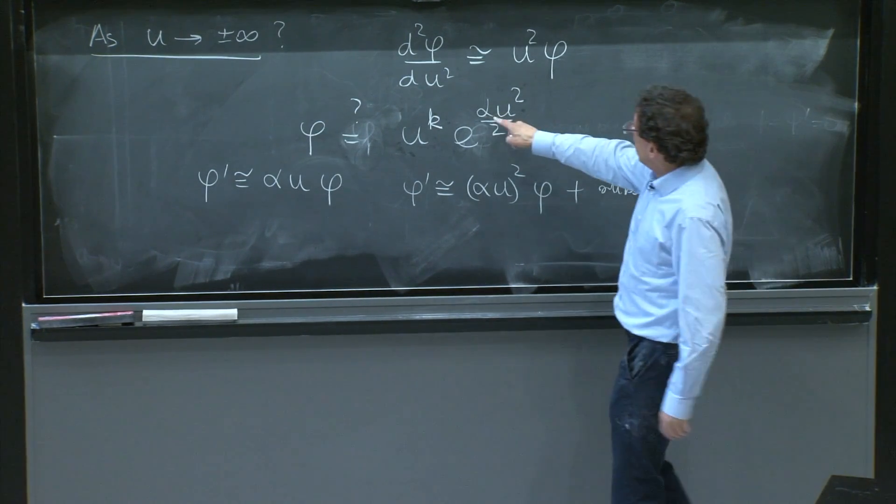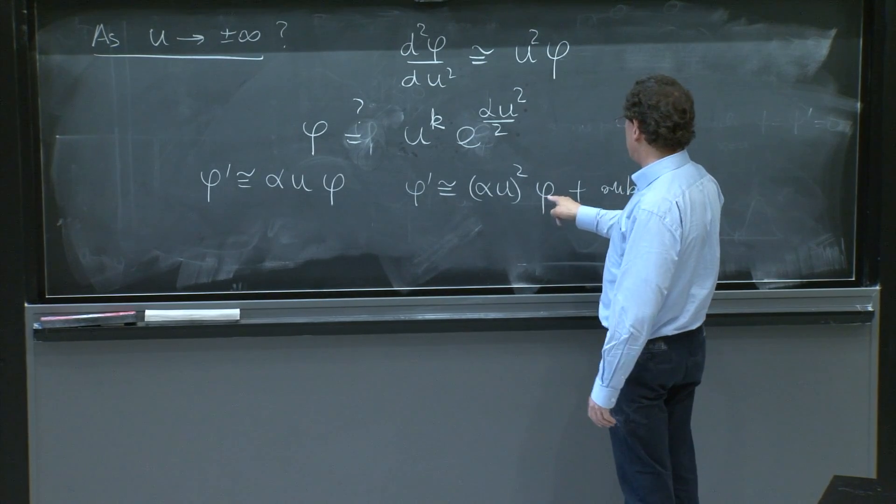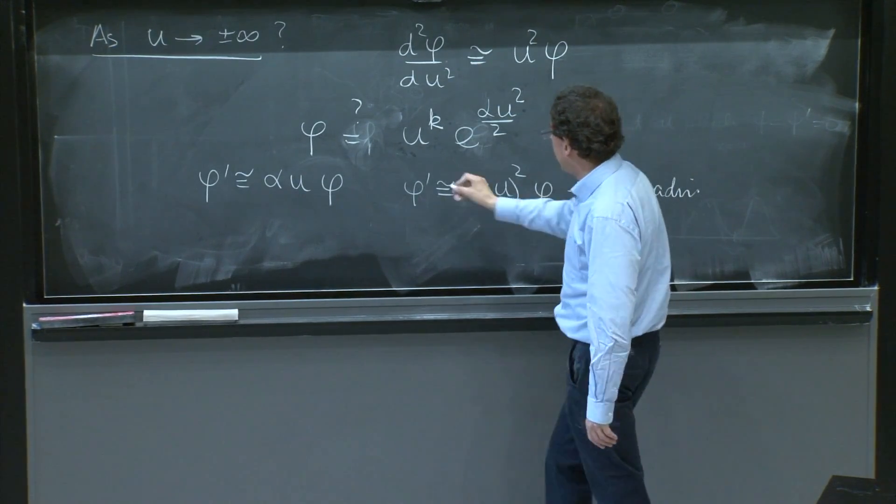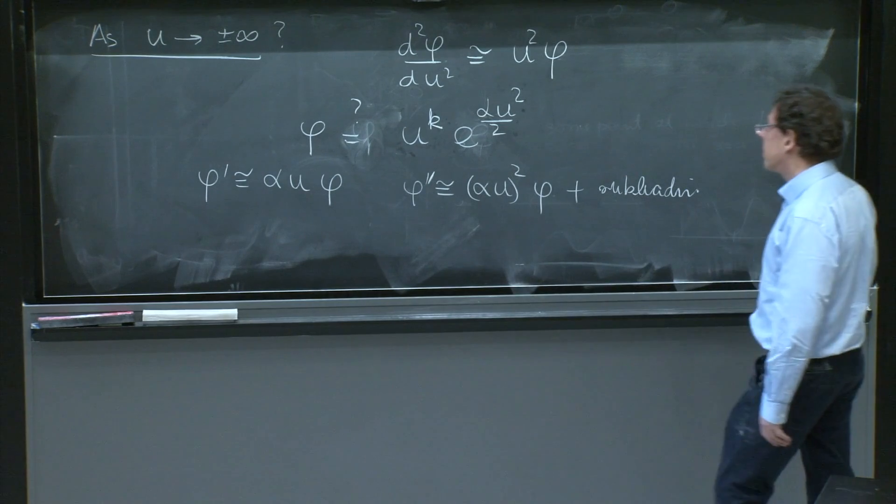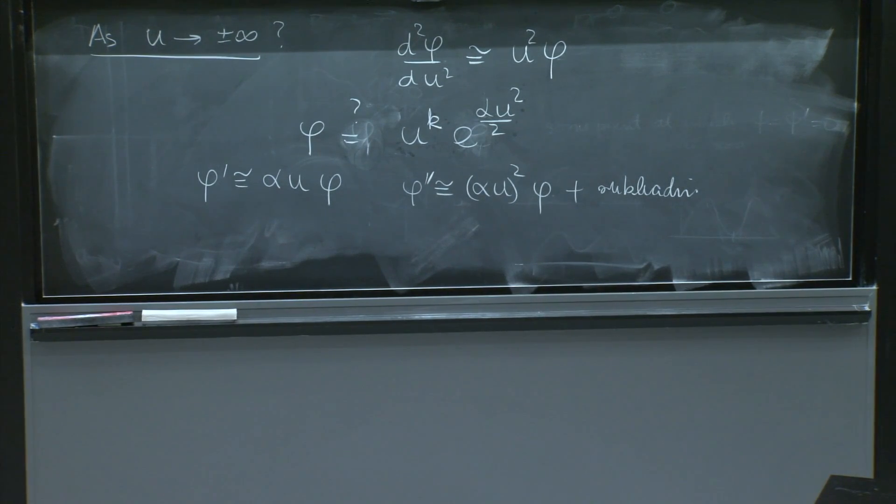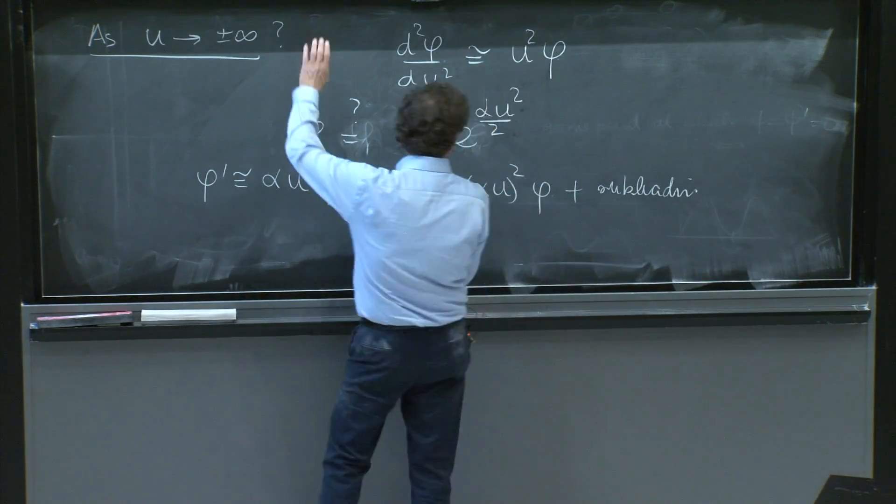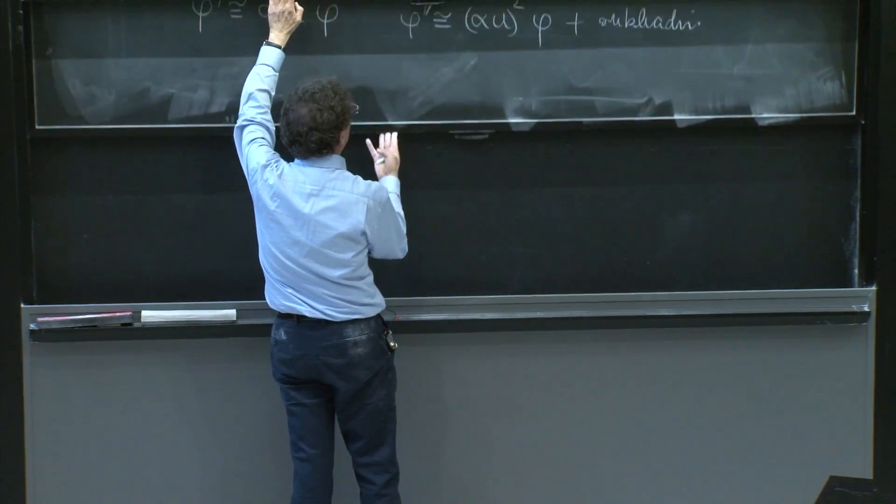So yes, with these exponentials, we get something like this. Psi double prime should have been here. And therefore, you see that alpha is plus minus 1.